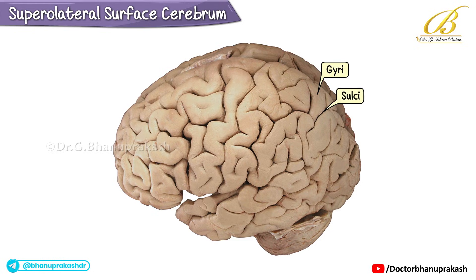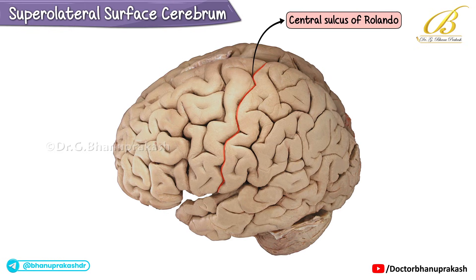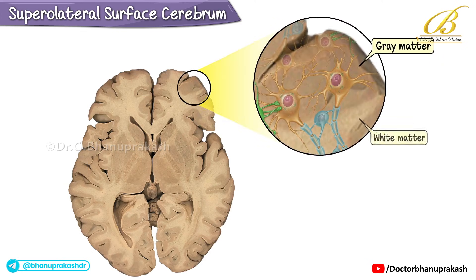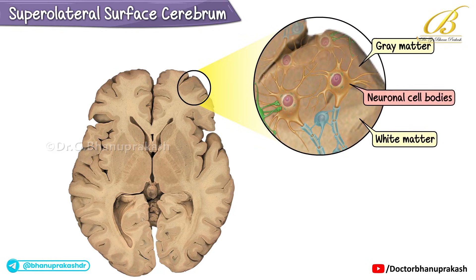Three significant sulci are highlighted in the image: the central sulcus of Rolando, the lateral sulcus or Sylvian fissure, and the parieto-occipital sulcus, better visualized on the medial view of the cerebral hemisphere. It is important to note that these sulci tend to be consistent across all human brains. The surface layer of gray matter on the cerebrum is primarily composed of neuronal cell bodies making up the cerebral cortex.